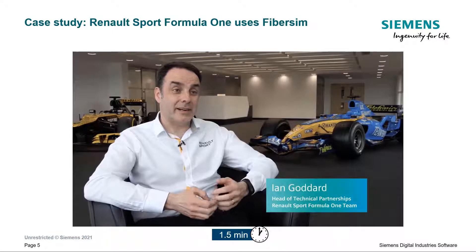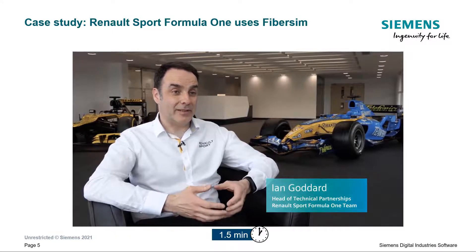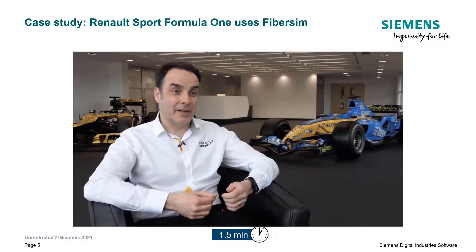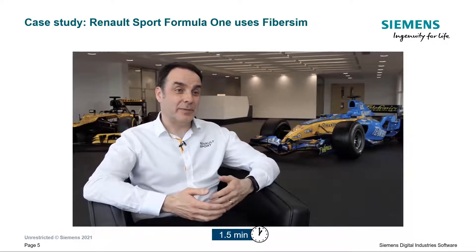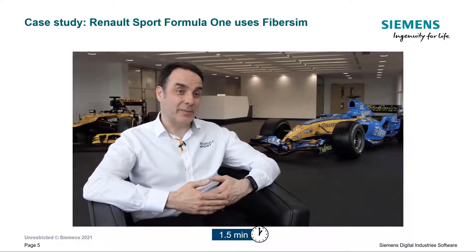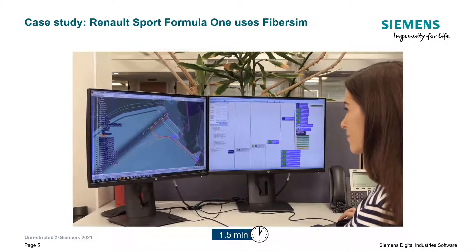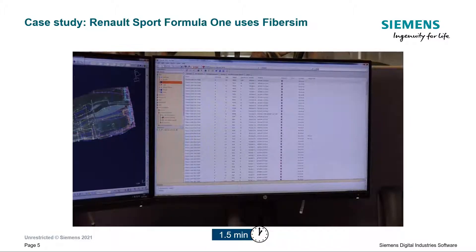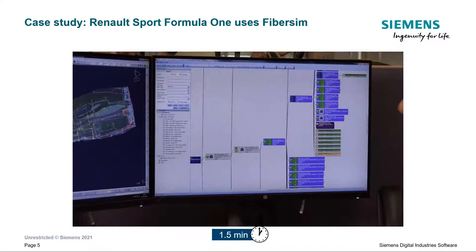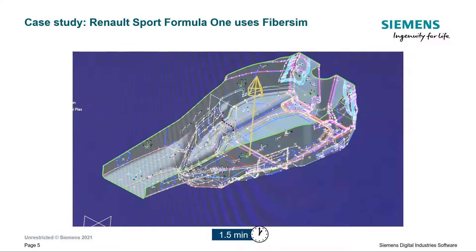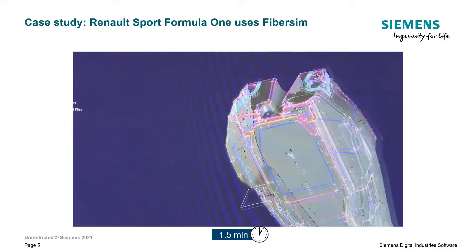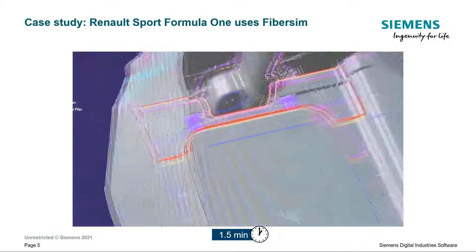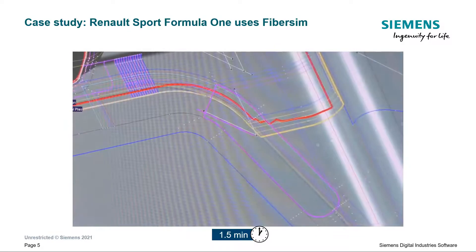For us, the design might start in aerodynamics. We're going to get fully released aero surfaces, but it's nothing more than that — a surface with no structural properties. So we initially need to work very closely with our stress engineering department, optimizing the structure, the laminate, and the material properties of what that composite part is going to become. And that's really where FiberSim starts to tie all these departments together.